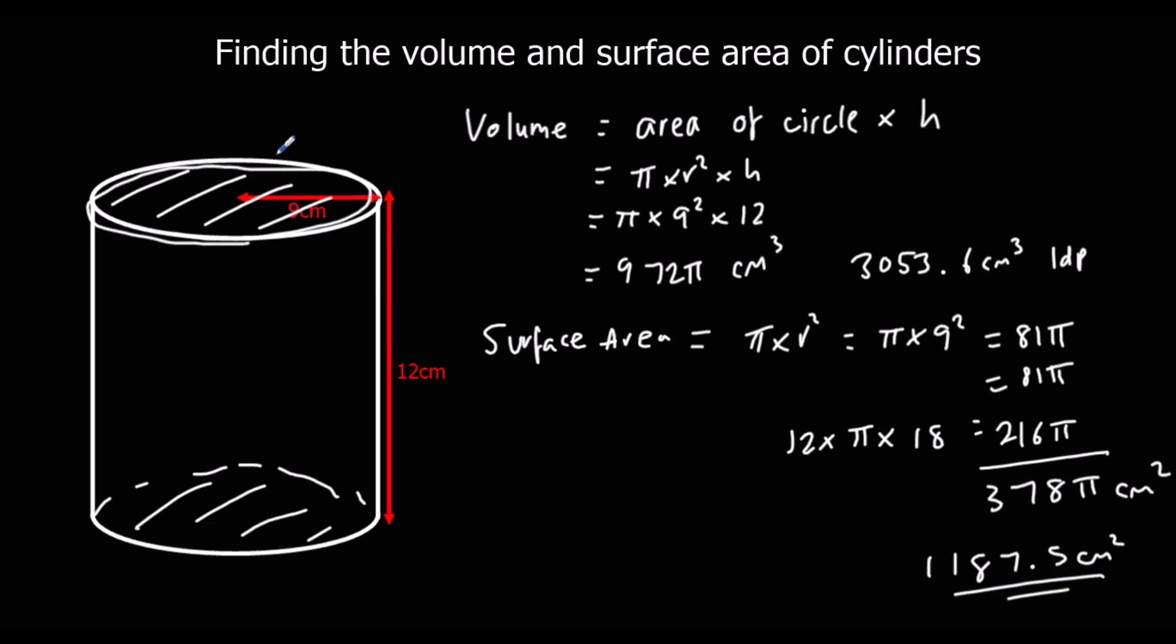So volume, area of the top times how far down it goes. And surface area, area of the two circles plus the circumference times the height.